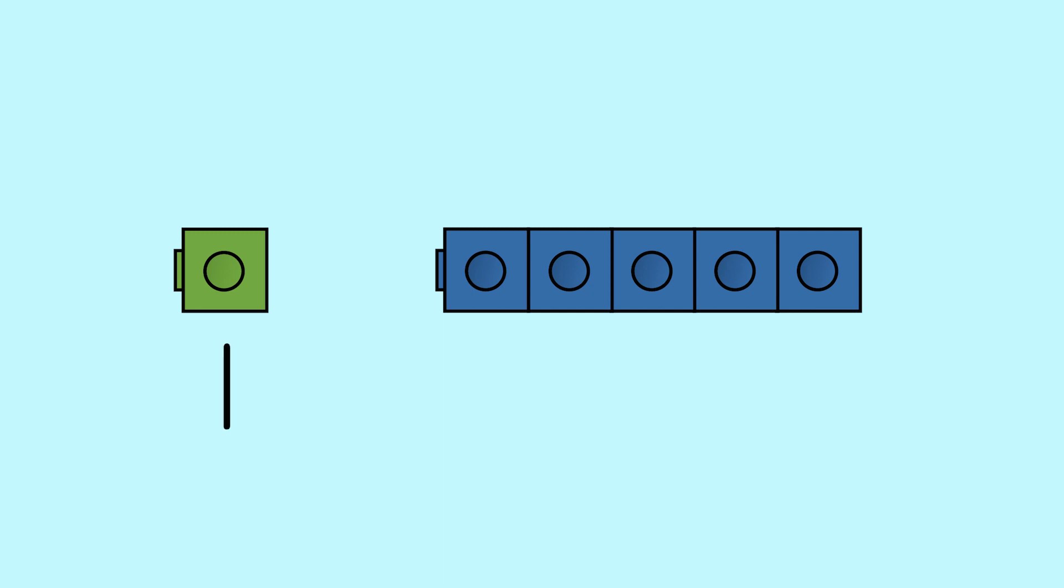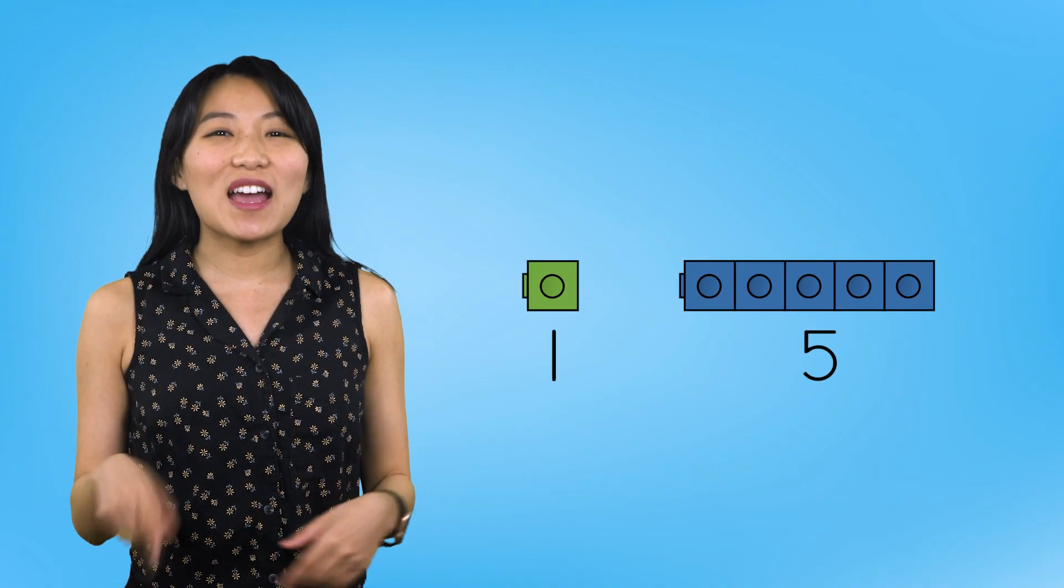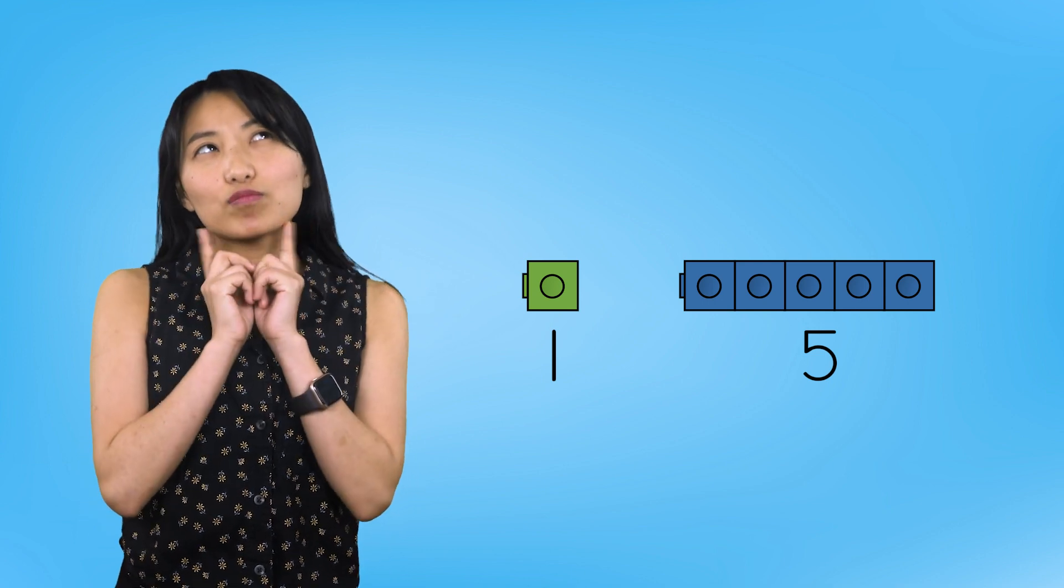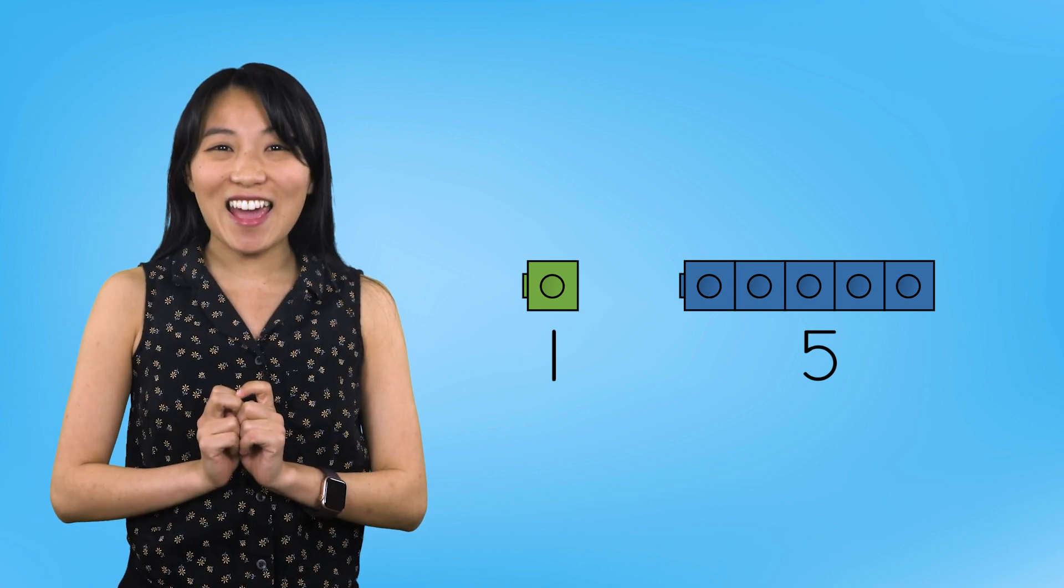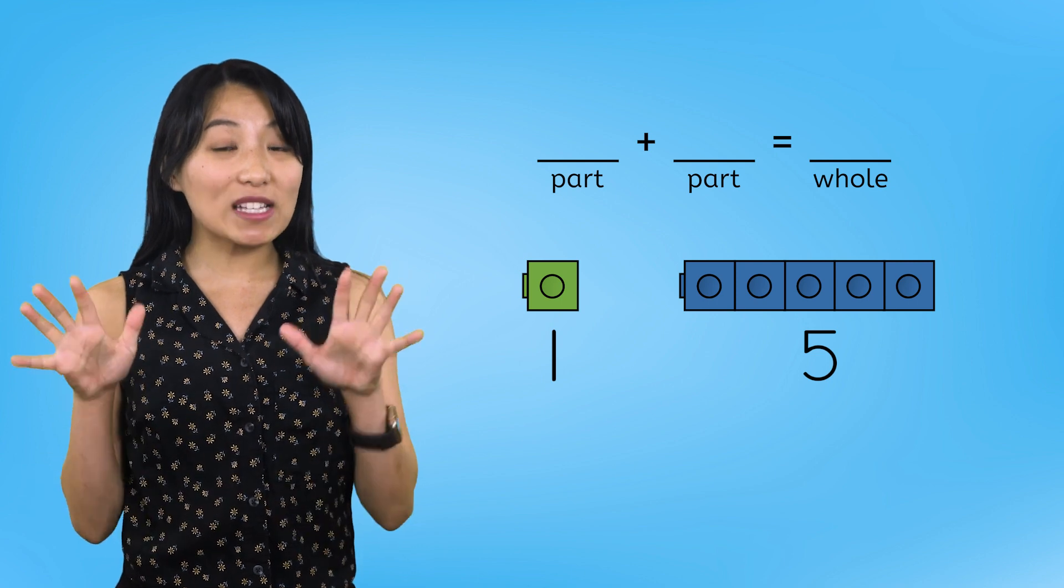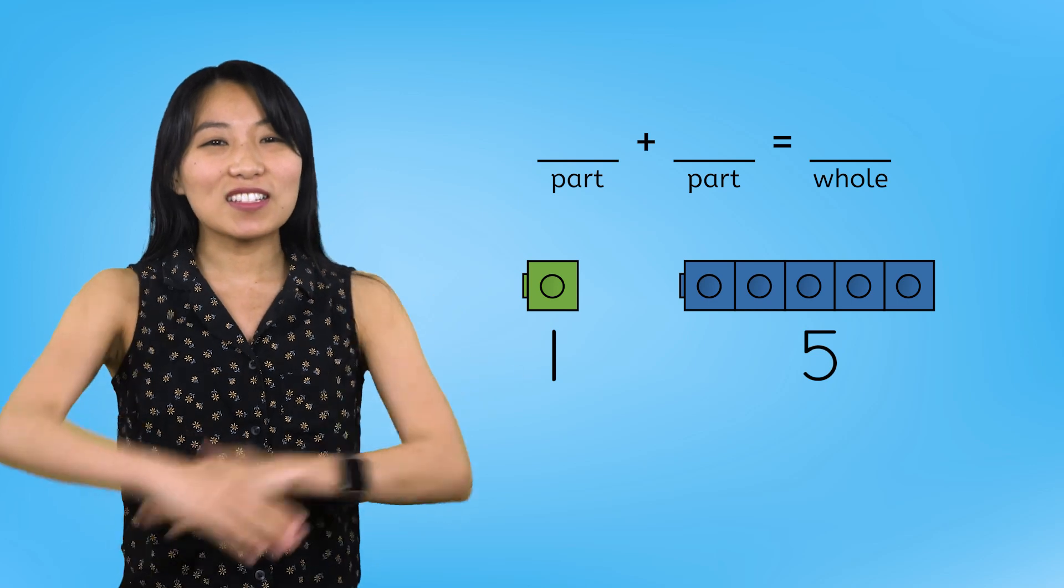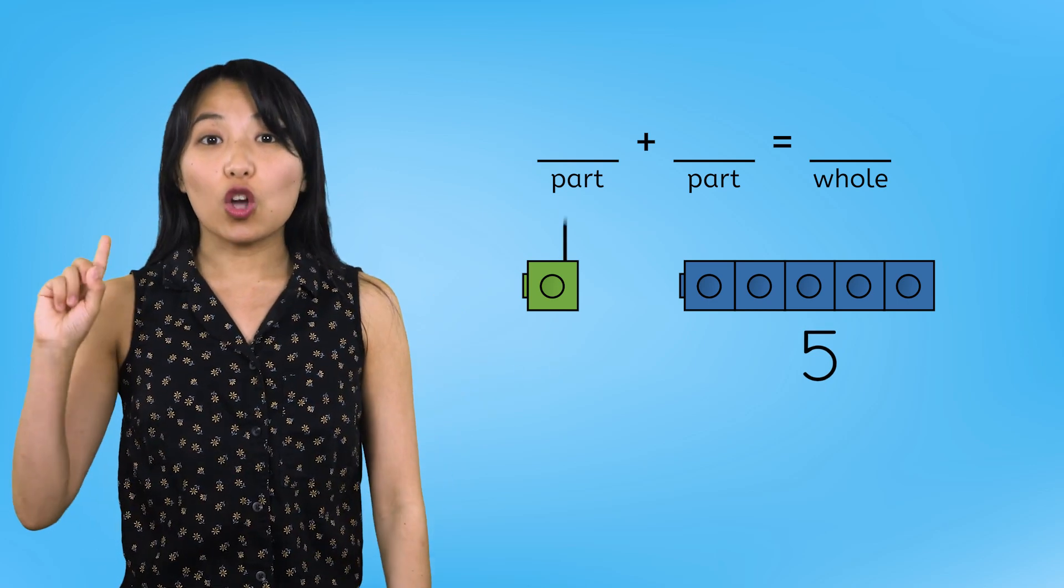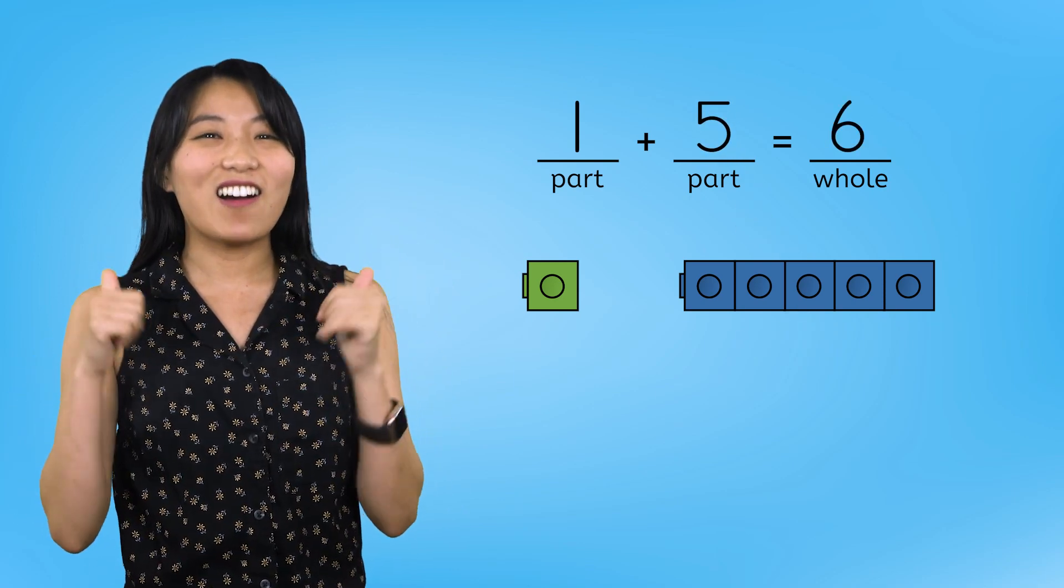One part is 1, and the other part is 1, 2, 3, 4, 5. We found our first way to compose 6. Remember, addition sentences always follow a pattern. Part plus part equals whole. So 1 plus 5 equals 6. Awesome!